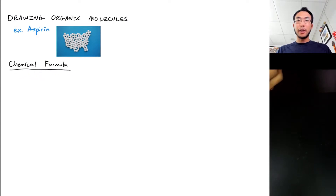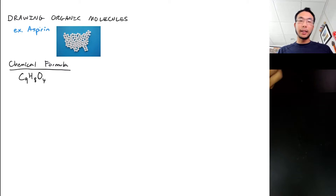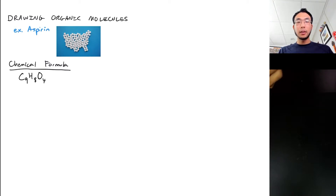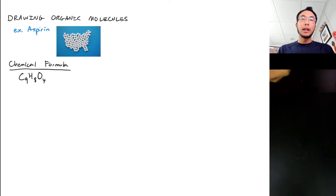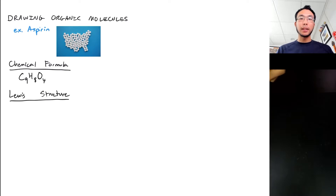One way of talking about aspirin in a chemical sense would be to provide a chemical formula. It turns out if you look that up you'll find that it is C9H8O4. That's great, but it doesn't tell you what the actual arrangement of atoms is. So the next step people might do is to draw a Lewis structure to show what the bonding of atoms looks like.